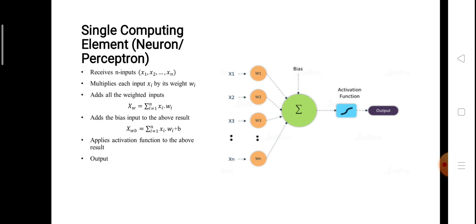After obtaining this weighted biased input we apply an activation function over it and get the actual output. You need to understand that the actual output coming out of the activation function may or may not equal the target output — the output which we exactly want our system to produce, matching the output in the learning data. After applying the activation function we get the actual output and then check whether it matches the desired or targeted output. We now discuss what an activation function is and what different types of activation functions we can have in neural networks.